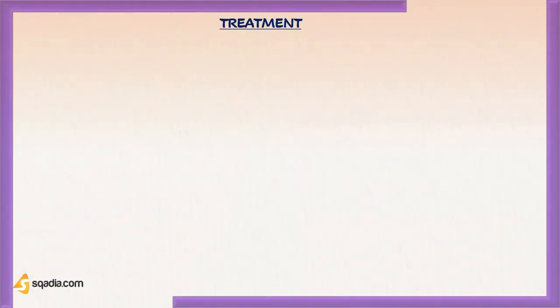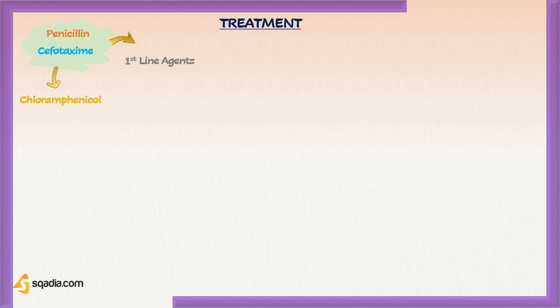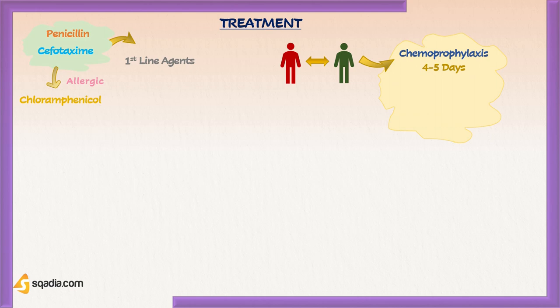Meningococcal infection is life-threatening and rapidly progressive, so treatment should not wait for laboratory confirmation. Penicillin or cefotaxime are first-line treatments, while chloramphenicol is still used for patients with a true penicillin allergy. All close contacts to the patient can be given chemoprophylaxis using rifampicin, ceftriaxone, or ciprofloxacin to eradicate nasopharyngeal carriage.